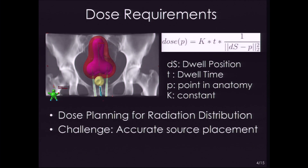Radioactive dose, due to a radioactive source, is a function of both the position — the dwell position — and the time it stays there, the dwell time. However, for a good radioactive dose distribution, we need accurate source placement, and that has been quite a challenge in practice due to the lack of feedback in clinic.